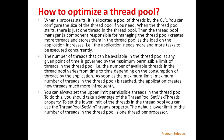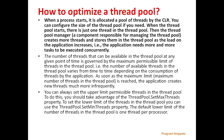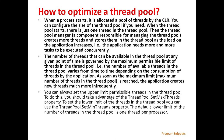Next we'll see how to optimize a thread pool. When a process starts, it is allocated a pool of threads by the CLR. You can configure the size of the thread pool if needed. When the thread pool starts, there is just one thread in it. Then the thread pool manager creates more threads as the load on the application increases — that is, as the application needs more tasks to be executed concurrently. The number of threads available at any given time is governed by the maximum permissible limit, and this number varies depending on the consumption of threads by the application.